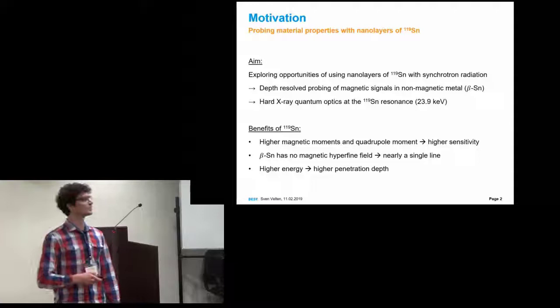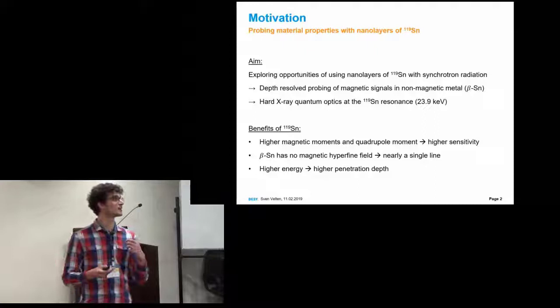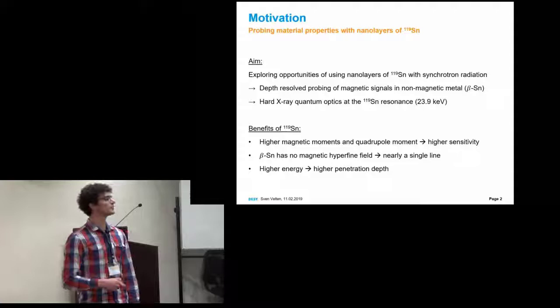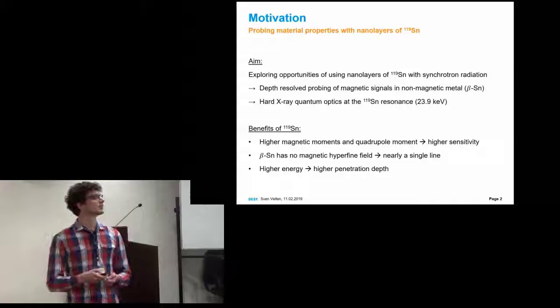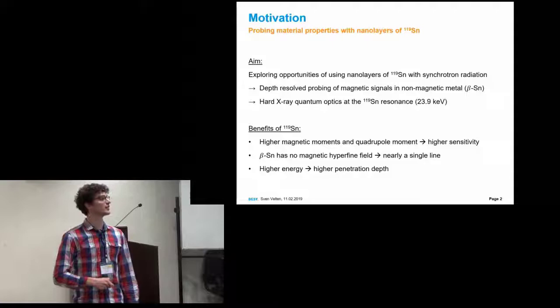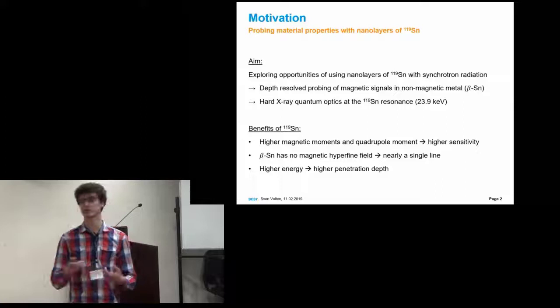To summarize, we want to use the benefits of 119 tin, which is that it has higher magnetic moments and higher quadrupole moments, so it is more sensitive to its magnetic and chemical environment. Also, beta-tin is paramagnetic, so it has no magnetic hyperfine field, and that means it is nearly a single line transition. It has a very small quadrupole splitting. And it has a higher resonance energy of 23.9 keV, so it has a higher penetration depth.